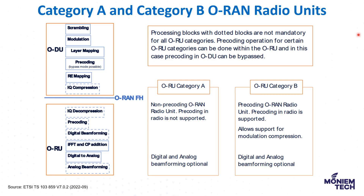Here you can see we have something called ORAN radio units, category A and category B, and all of them are based on this functional split. This is the ORU and this is the ODU, with high physical and low physical as discussed. There is a benefit to keeping the ORU as simple as possible because size, weight, and power draw all make the ORU more practical when you shift more functions to the ODU.